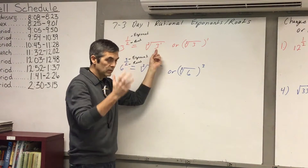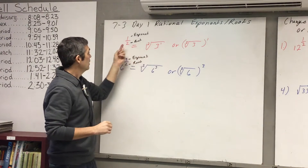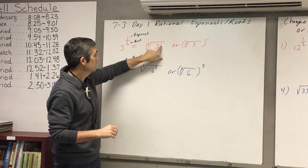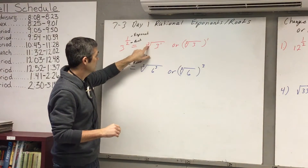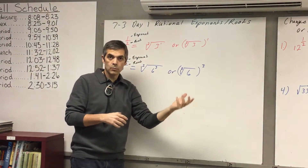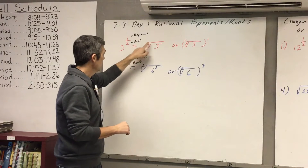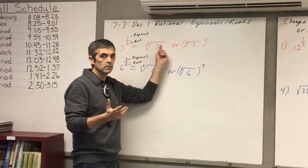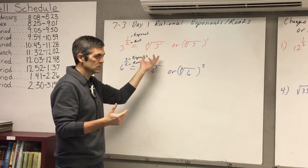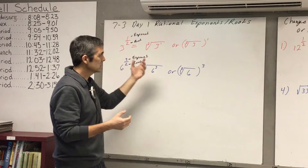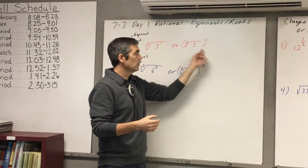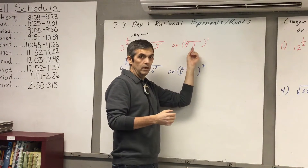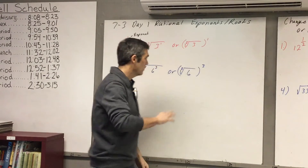There are two different ways to set this up. One: your exponent goes here — that's where I put the one — and then the root goes right in here. In this instance it's the square root, so you have the square root of 3 to the first power. Or you could set it up like this: put the whole thing in parentheses, take the square root of 3, and then it's all being raised to the first power.